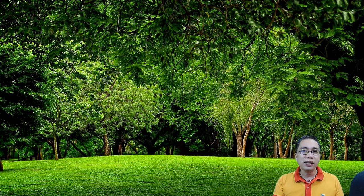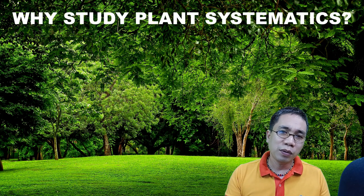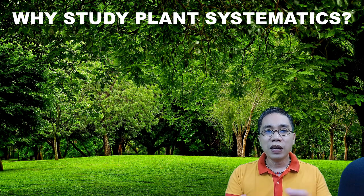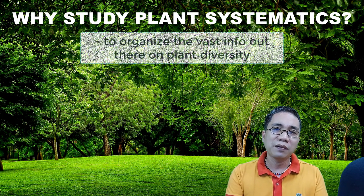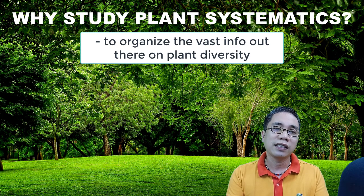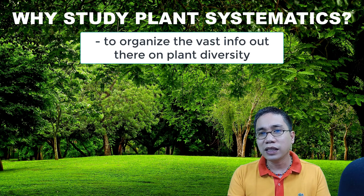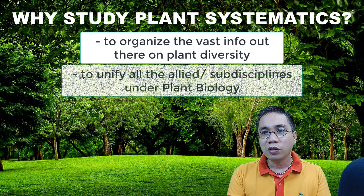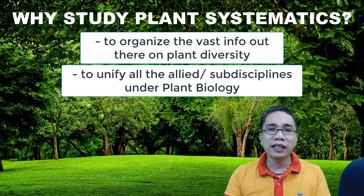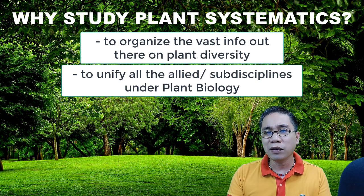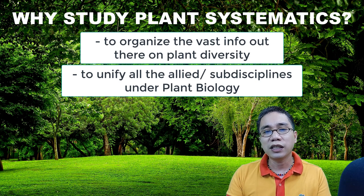I hope that this introduction has provided you a good insight on why you need to have this subject in your chosen field of study. Maybe I can give you the three important reasons why you need to study plant systematics. First, you have to organize the vast amount of information out there about the diversity of plants — you really need systematics there. Two, it also unifies all the sub-disciplines in plant biology, from plant anatomy and physiology to microbiology, ecology, and the rest of plant biology. Systematics will always be part of these sub-disciplines.